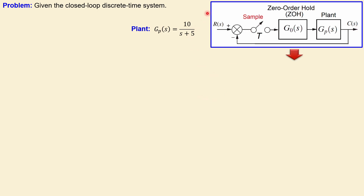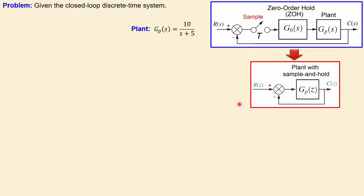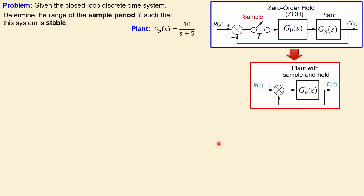If we convert this s-domain representation to the z-domain, we will have the plant including the sample and hold operation together. In this specific example, we would like to determine the range of the sample period T, or equivalently the sampling frequency (1/T), such that the system is stable.